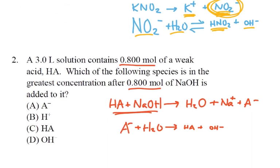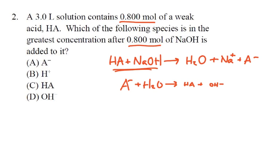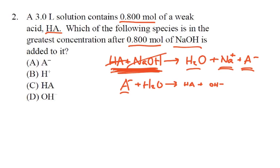Question 2: We have a 3-liter solution containing 0.8 moles of weak acid HA, and we add 0.8 moles of base. I have the same amount of acid as base, so they completely react — none of the acid is left over. I'll have water, a lot of sodium, and quite a bit of A-. That A- will react with water to give a little bit of HA and a little bit of hydroxide. Of the choices, the greatest concentration is A-.